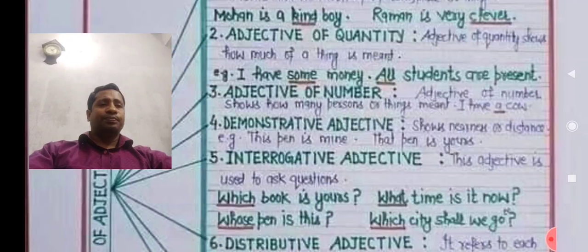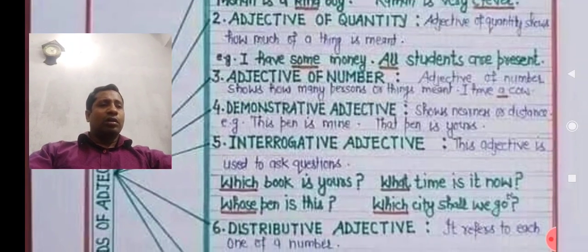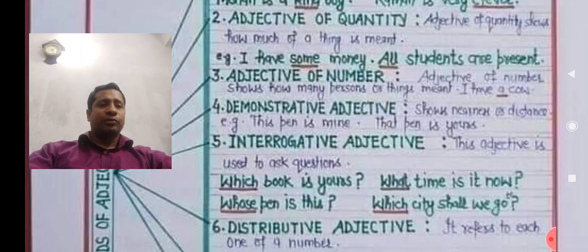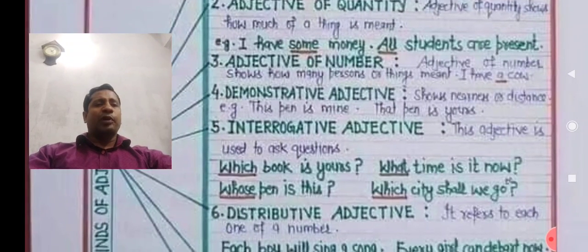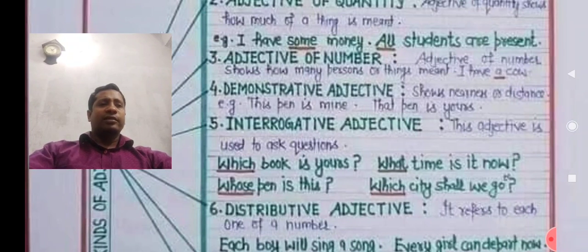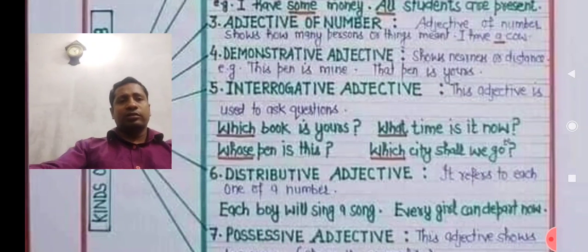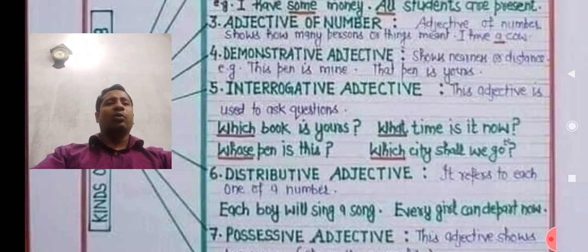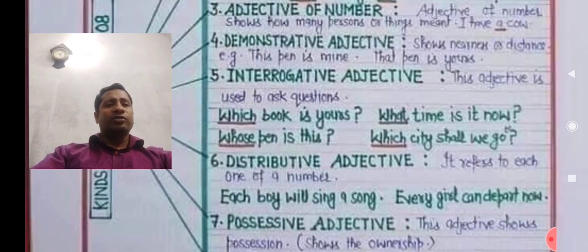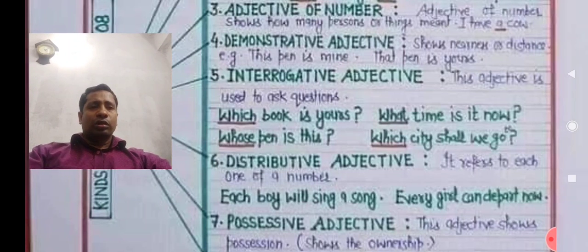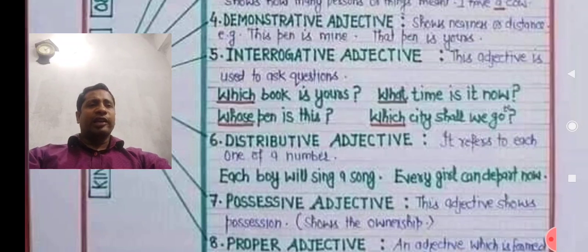Demonstrative adjective shows persons or things distinctively. Look at the sentences: 'This pain is mine.' Words like this, that, these, those are demonstrative adjectives. If this, that, these, or those modifies or describes a noun — for example, 'this pain' where pain is described by 'this,' or 'that pain' where pain is described by 'that' — that is called a demonstrative adjective.